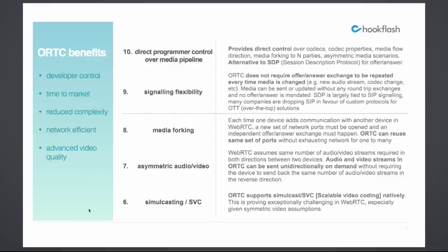Number eight, media forking really just allows ORTC to use the same set of ports. Number seven, one of the core attributes of ORTC and really fundamental to the architecture, is it can be asymmetric. WebRTC as originally conceived was one mic and camera to one mic and camera, but as we see the evolution of the standard, we're opening up asymmetric applications — multi-cameras, multi-mics, multi-real-time media from one end without having to have symmetric connections on the other.